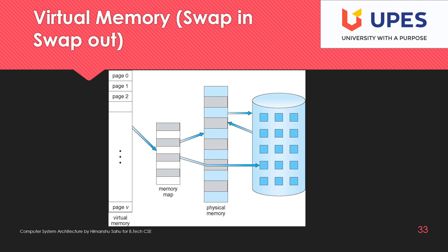This diagram shows how virtual memory works. The logical space is larger than the physical memory because there is a swap-in and swap-out process. Programs are stored in secondary storage, and whenever a particular block is required it is picked up from secondary storage and utilized. When a block is no longer useful, it is put back to secondary memory. This concludes our discussion of memory.